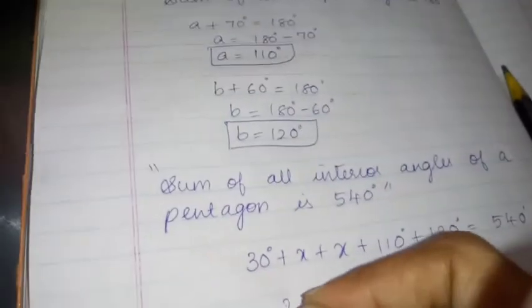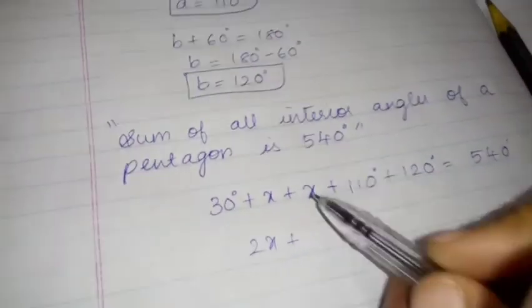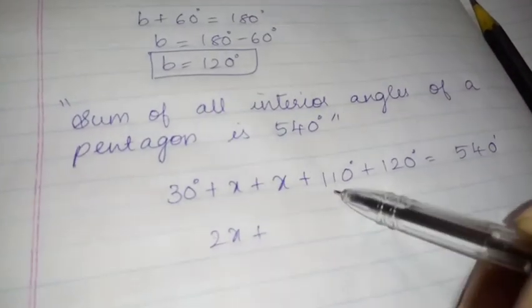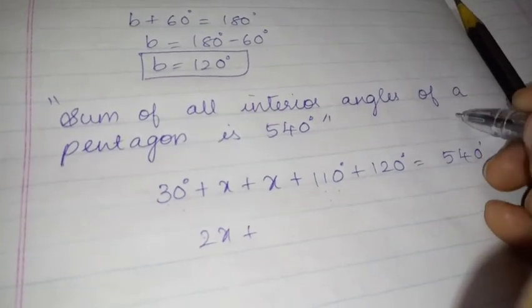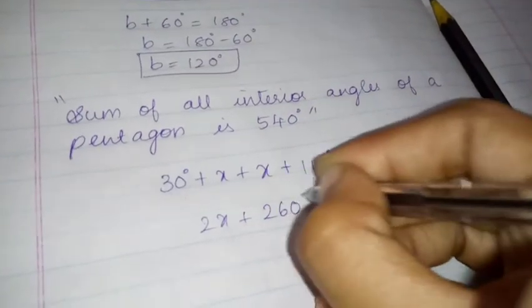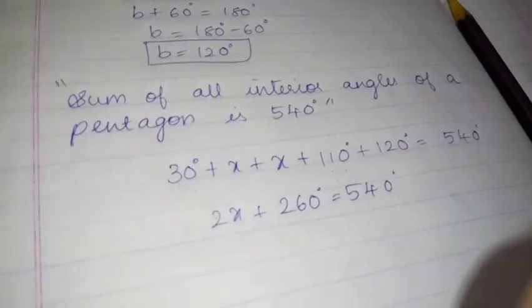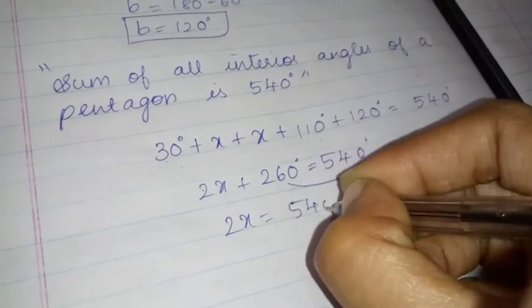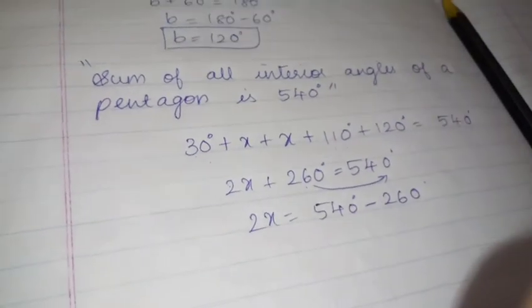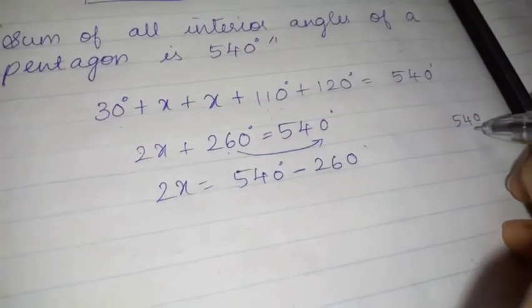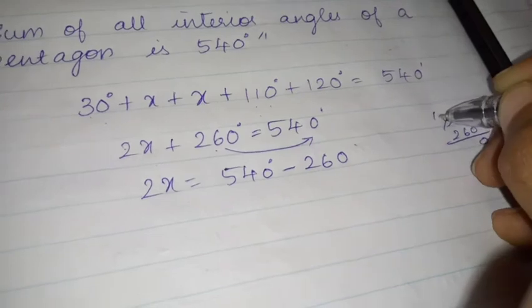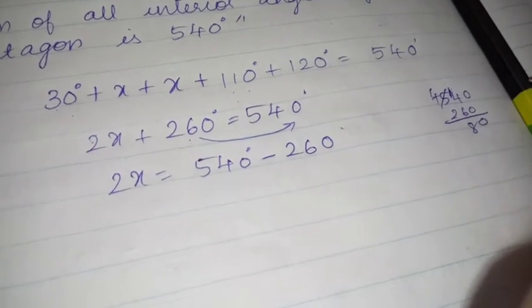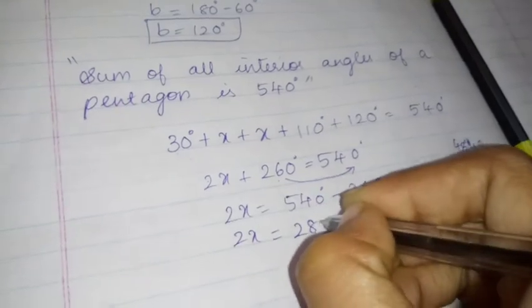X plus X is 2X. 2X plus 30 plus 110 — variables you add together, constants you add together. 30 plus 110 is 140, 140 plus 120 is 260. So 2X plus 260 equals 540. 2X is equal to 540 minus 260 — 540 minus 260 is 280. So 2X is equal to 280 degrees.